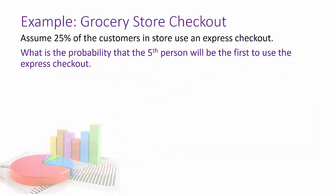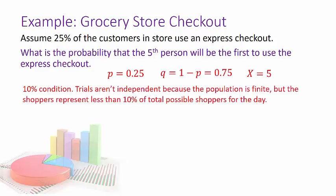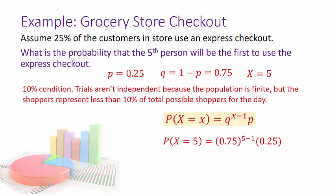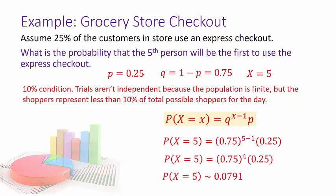Another example: a grocery store where 25% of customers use an express checkout. What is the probability that the fifth person will be the first one to use the express checkout? P = 0.25, Q = 0.75, X = 5. The trials aren't truly independent because the shopper population is finite, but shoppers represent less than 10% of total possible shoppers for the day, so it's fine. Substituting into the geometric formula gives 0.0791.